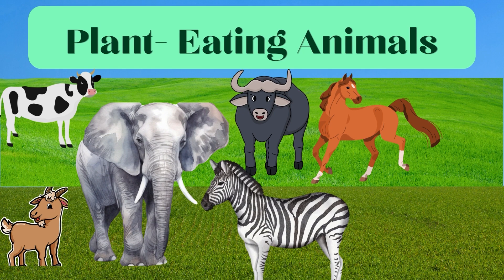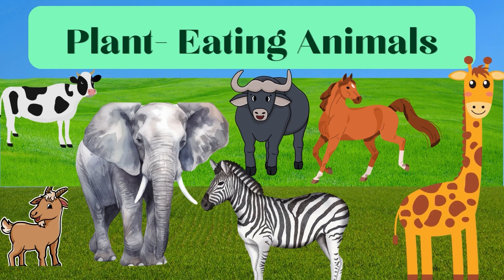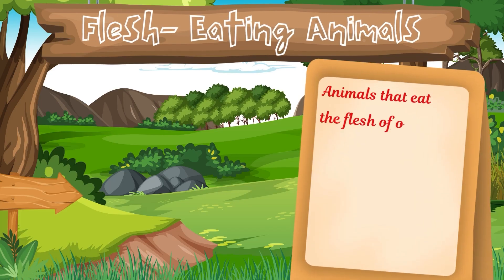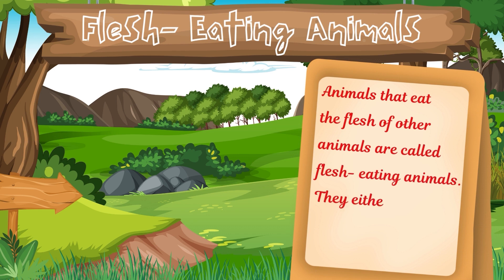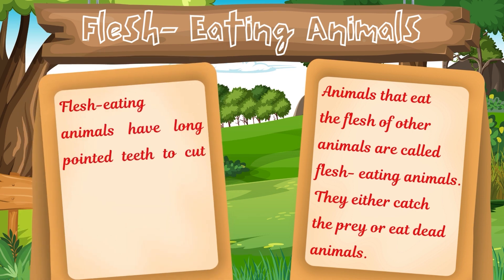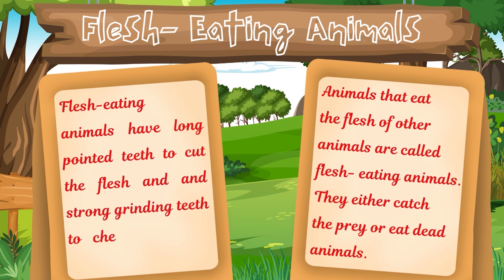Zebra and giraffe are also examples of plant-eating animals. Flesh-eating animals. Animals that eat the flesh of other animals are called flesh-eating animals. They either catch prey or eat dead animals. Flesh-eating animals have long, pointed teeth to cut the flesh and strong grinding teeth.